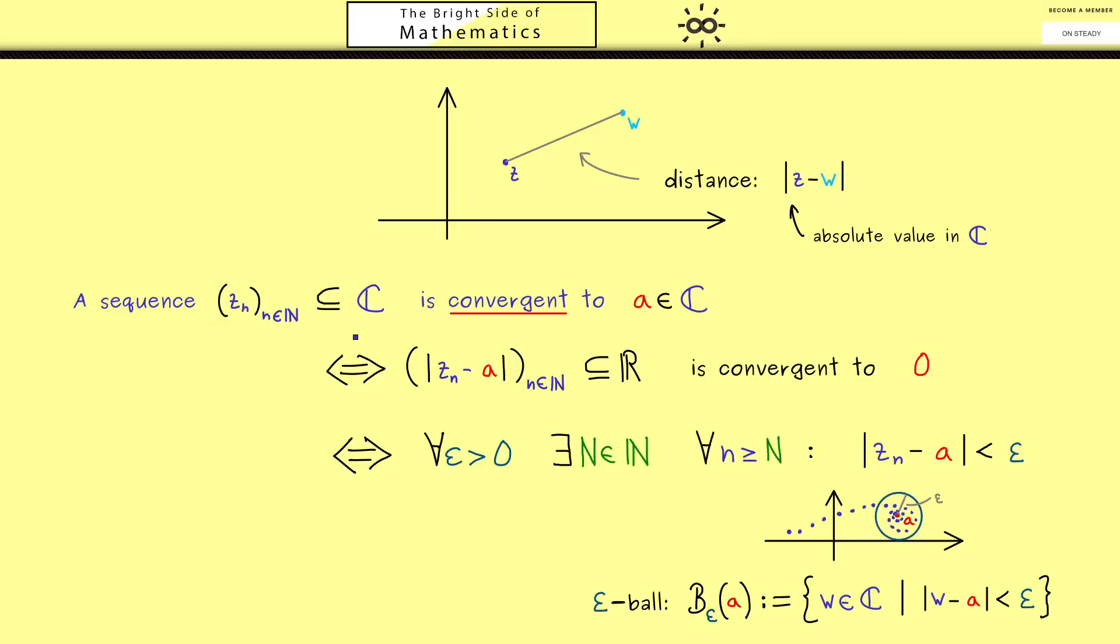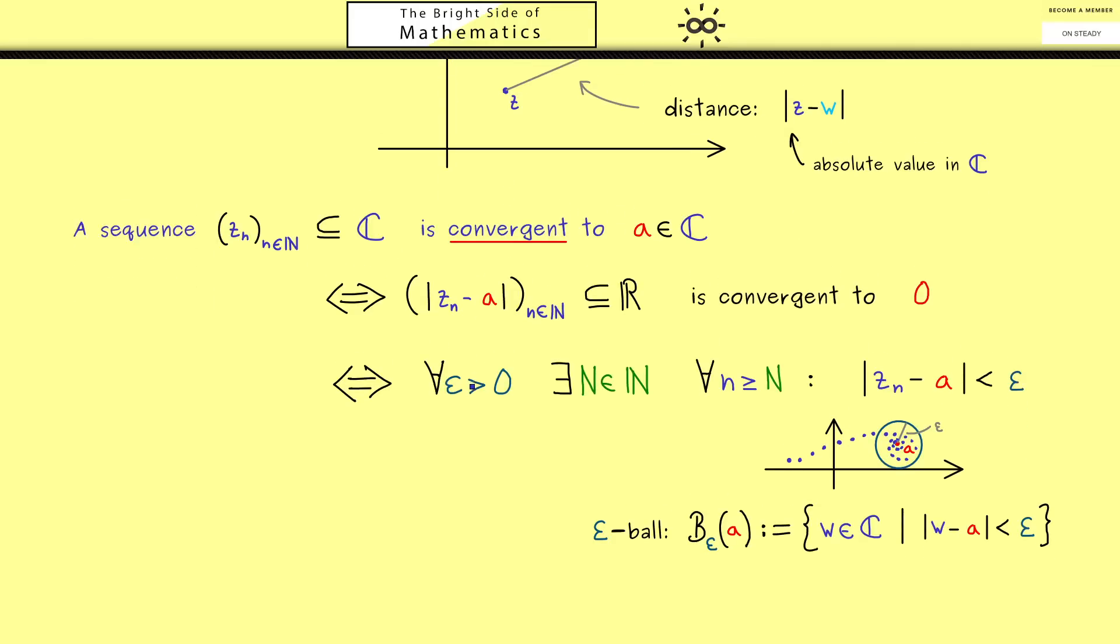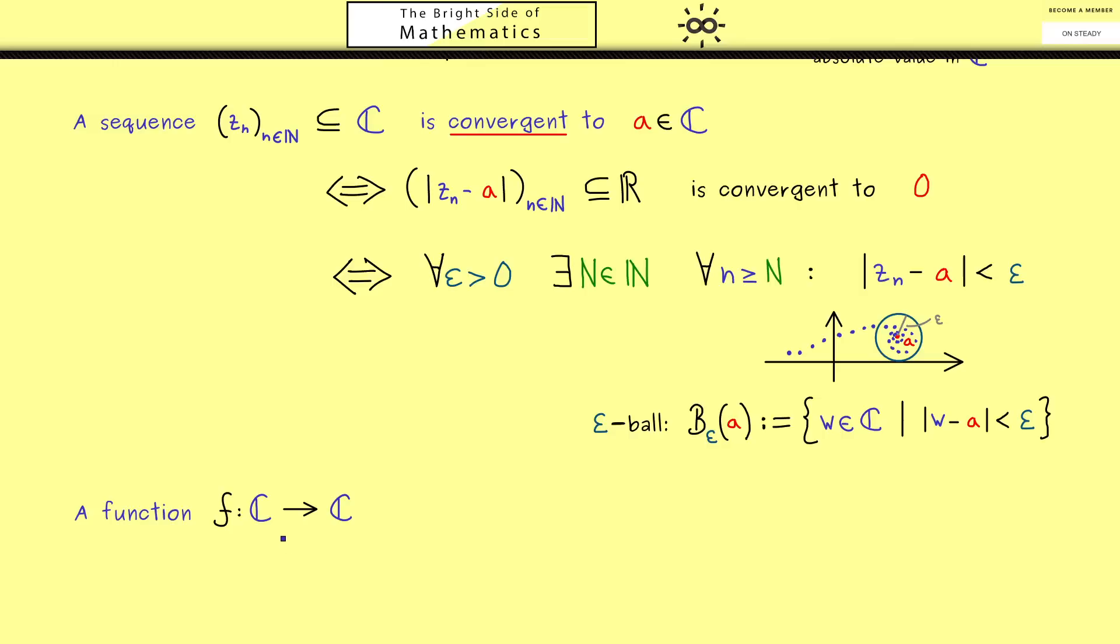Because you now know what a convergent sequence in the complex numbers is, you also know what a continuous function between C and C is. In fact, it has exactly the same meaning as for real functions. Small deviations in the input should be translated into small deviations in the output. This can be formulated with sequences.